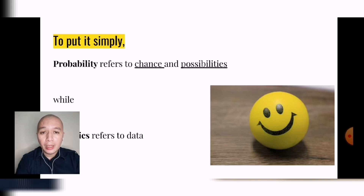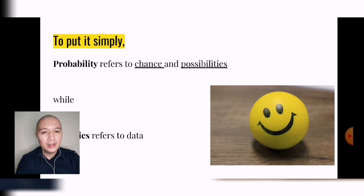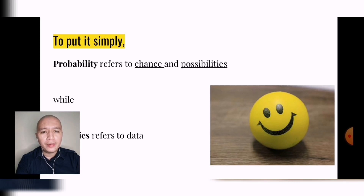To put it simply, probability refers to chance and possibilities. Whenever we talk of chances or possibility, it means probability — like when we say, what is the probability or chance of rain? What is the probability or chance of me winning the lotto? Those are terms that indicate a statement pertains to probability.